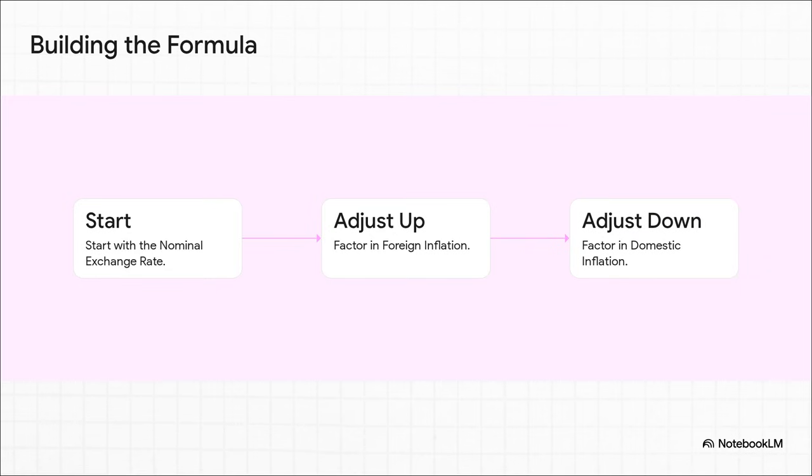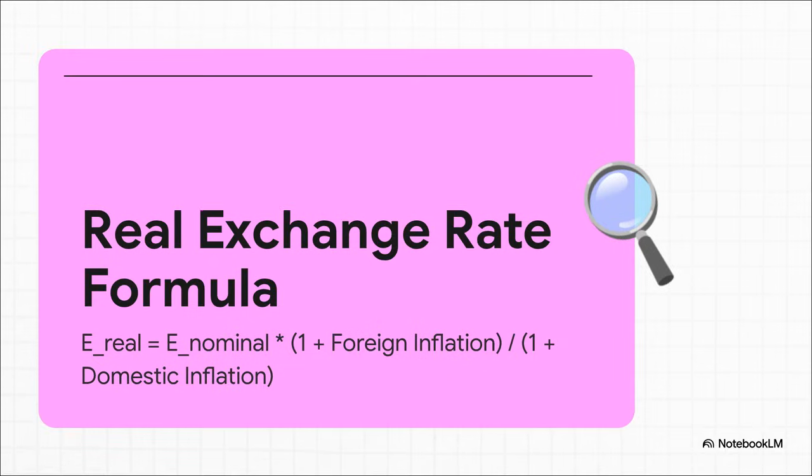So let's see what that looks like as a formula. Here it is. This is the magic formula. The real exchange rate equals the nominal rate multiplied by the ratio of foreign inflation to domestic inflation. This is how we put all the pieces together to see what's really going on.